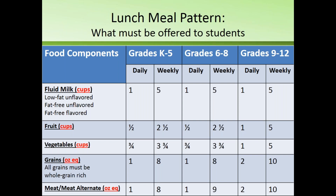With grains, you must offer one ounce equivalent of grain every single day for grades K through 8, and eight ounces over the course of the week. If you are only offering that minimum amount of one ounce equivalent of grain every day, assuming five school days in a week, you wouldn't meet your minimum weekly offering. At high school, you must offer two ounce equivalents of grain every single day, and if you do that every day, you will meet your weekly minimum of 10 ounce equivalents. For grades K through 8, while it's okay to offer one ounce equivalent on some days, you'll want to make sure you have other days where you've offered more to meet your weekly minimum.